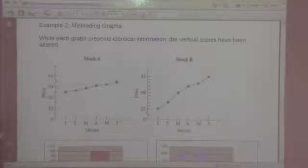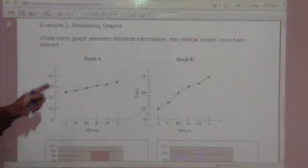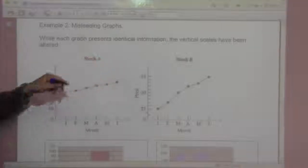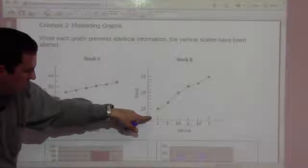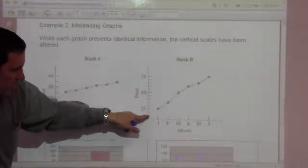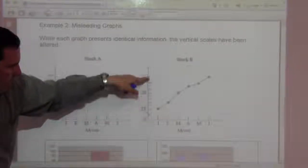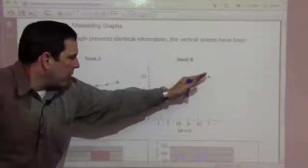So here we have some misleading graphs. Each graph presents identical information. The vertical scales have been altered. So here it's 0 to 40. Here it's 0 but then this little zigzag means there's a bunch of stuff down there and it starts here at 25 to 35. So it shows the difference of 10. It looks like a much more dramatic increase than this.